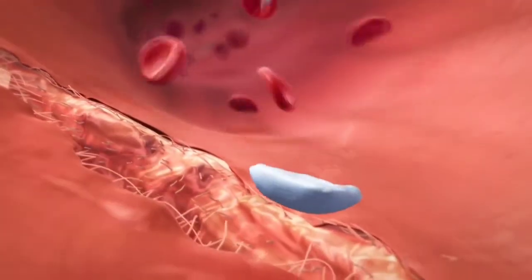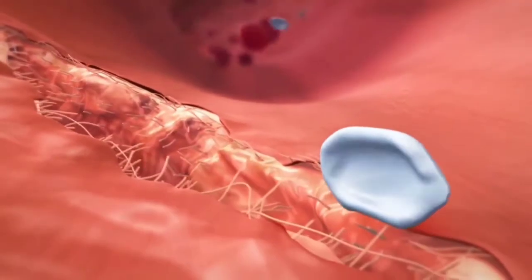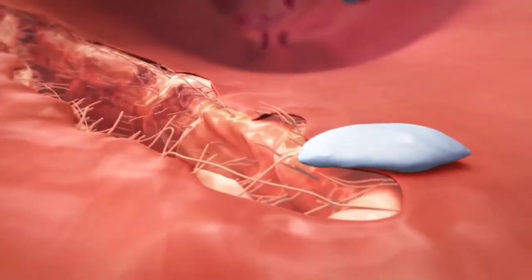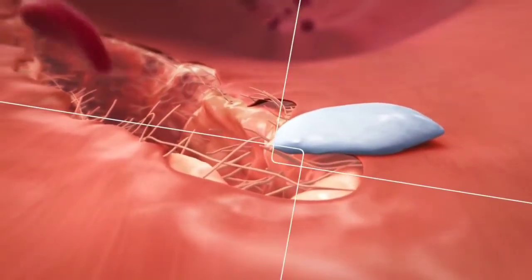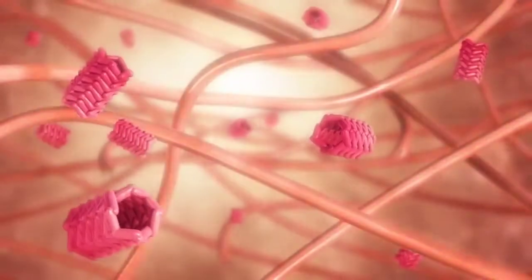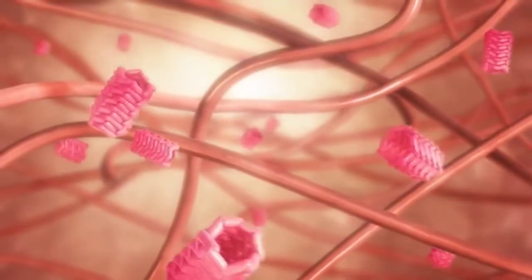In a first step towards clot formation, platelets are recruited to the site of vessel injury by now exposed molecules of the vessel wall, such as collagen and von Willebrand factor.